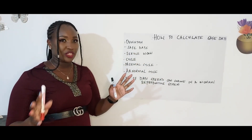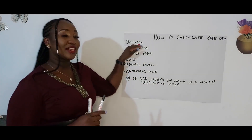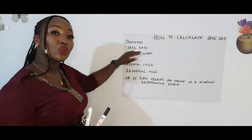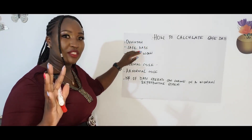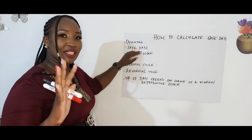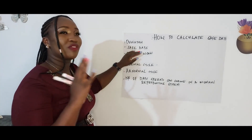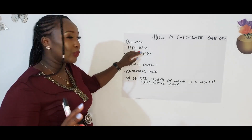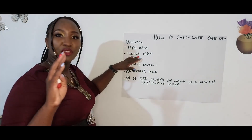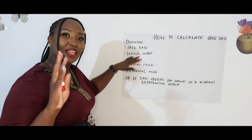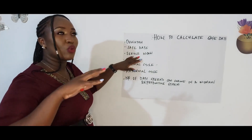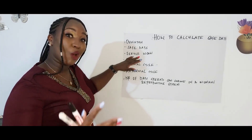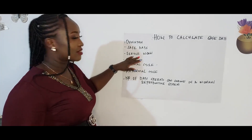I'm going to use this wall as my board because when something is taught practically, you'll get it more than just theory. Number one, I'll teach you how to track your cycle. Number two, I'll teach you how to calculate your safe days — those are your infertile days. Next, I'll teach you how to calculate your fertile window, which are the days you can have intercourse to get pregnant.